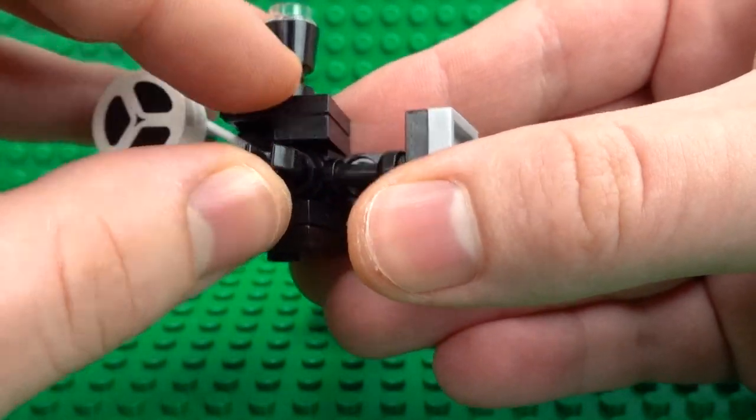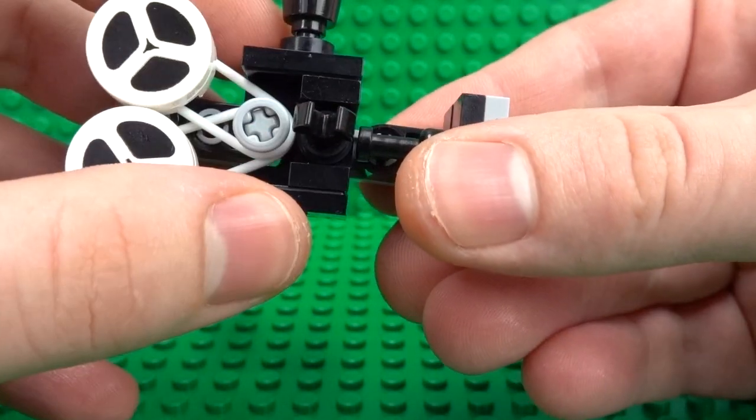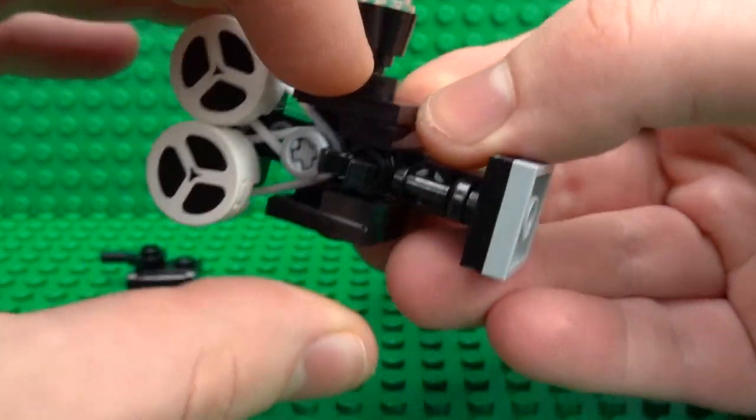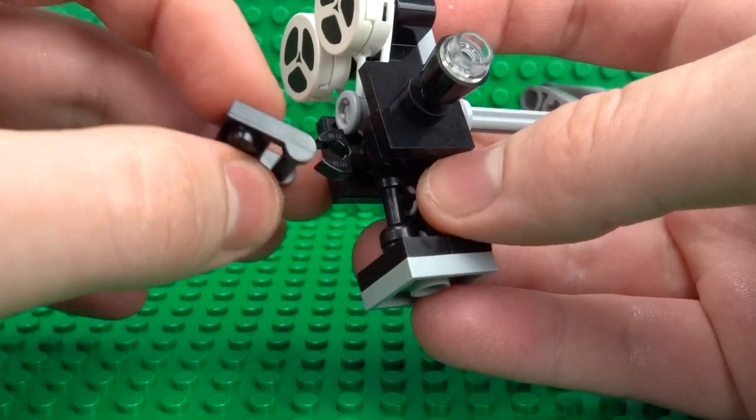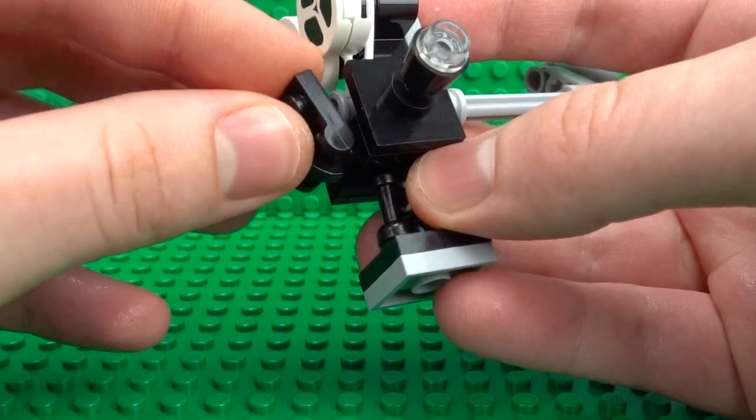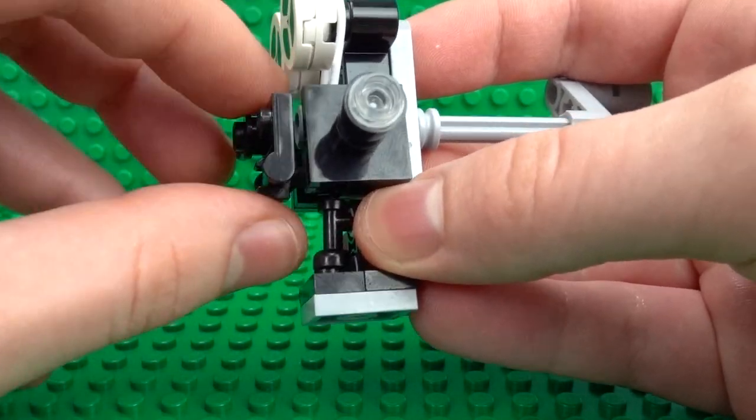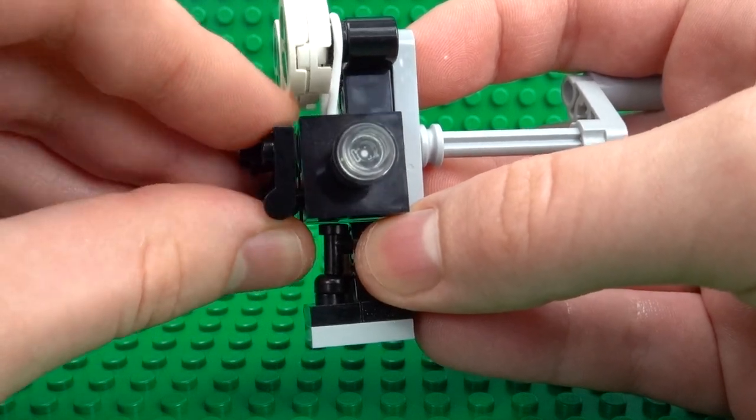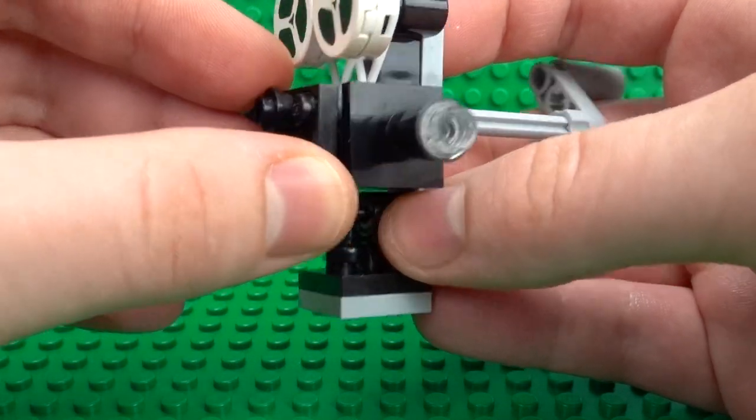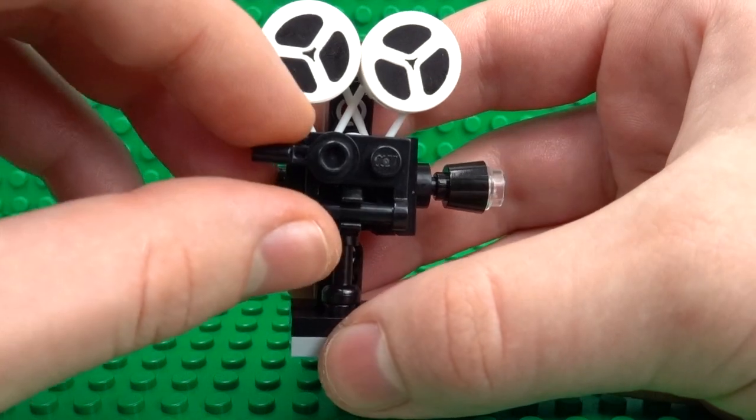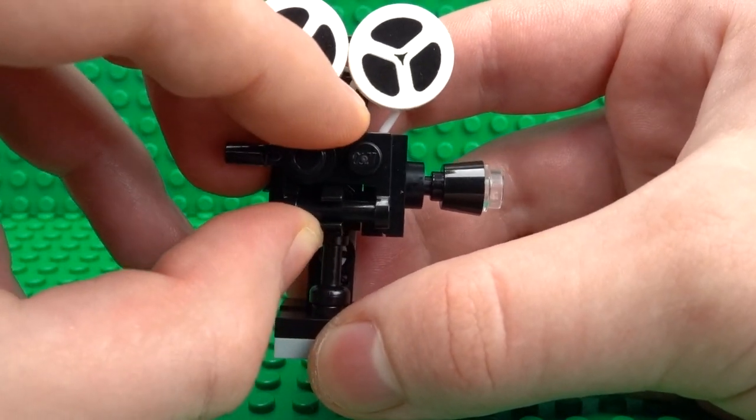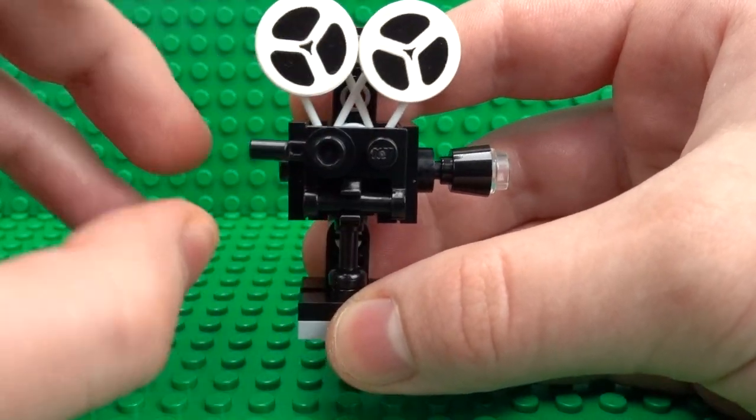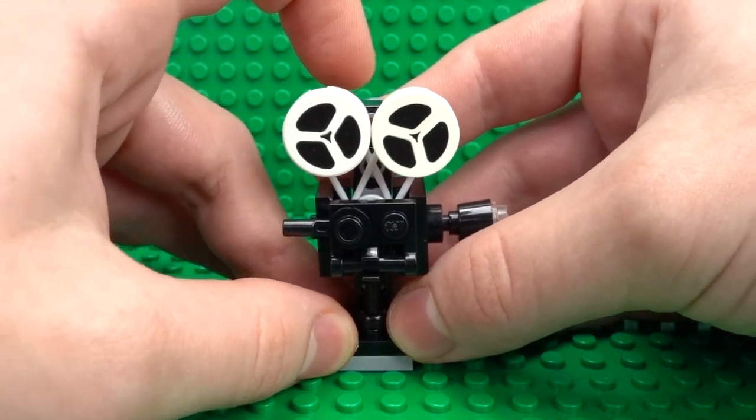So just press that down until that's nice and secured like that, and make sure that's not in too far, just about there. And you can always adjust that a bit later. So you see it's a bit too far of a gap, so you can just wiggle that in, bring it closer. And now we have a little access hatch where you can change out the reels of film inside your vintage movie camera. And with that, your working LEGO vintage movie camera is complete.